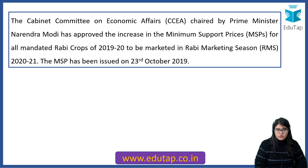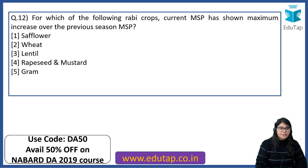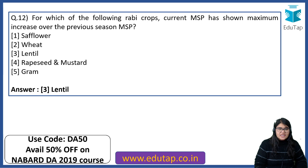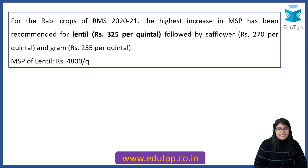For which of the following Rabi crops has the current MSP shown maximum increase over the previous season MSP? MSP-related questions are going to be there in your paper. The right answer is Lentil. For Rabi crops, the highest increase in MSP has been recommended for Lentil, followed by Safflower and Gram.